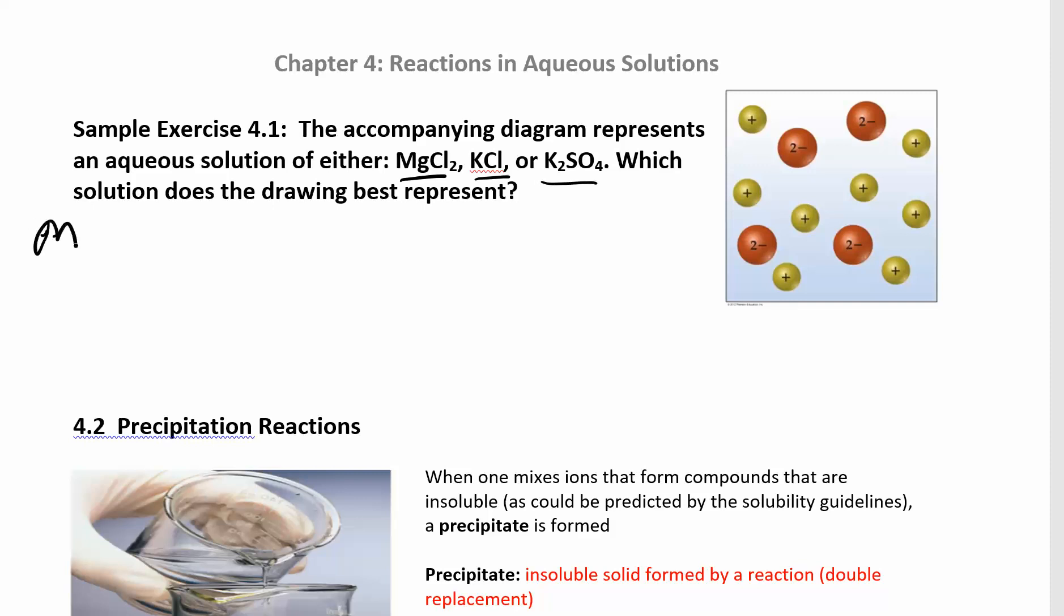Magnesium has a plus two charge and Cl2 means I have two chloride ions. So the ratio would be one plus two ion for every two minus one ions if this is magnesium chloride. If it was potassium chloride, potassium has a plus one charge, chloride ion has a minus one charge, so it would be one to one. And then K2SO4, SO4 is a polyatomic ion. We'll look at these and we've looked at these in chapter two when we started naming. So we have potassium plus and then one SO4 with a two minus. So I have